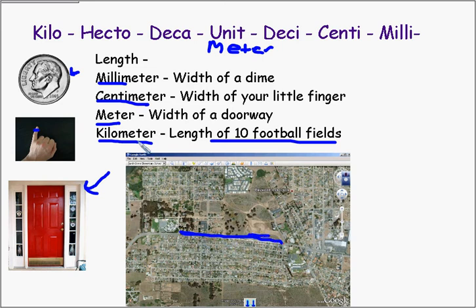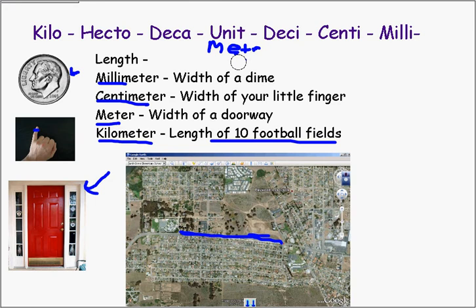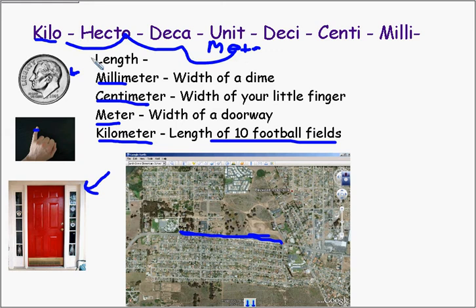So meters are the basic unit, and a kilometer — kilo-meter. If we're converting our meter to kilometers, a kilometer is a thousand meters. We'd add three zeros, or move the decimal point three places to the right. It's a thousand meters from here.